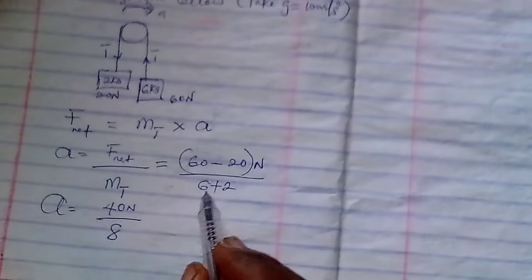Therefore, the net force will now be 60 minus 20 Newton over the total mass, which is 6 plus 2. Therefore, the acceleration will now be 40 Newton over 8. Because 6 plus 2 is 8. Therefore, the acceleration will become 5 meter per second squared. So that is our acceleration.